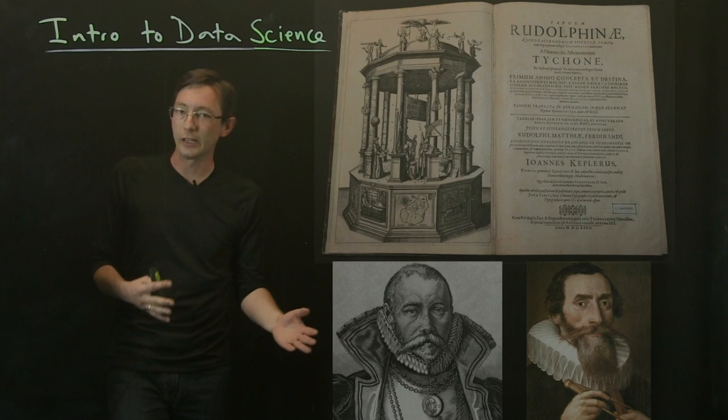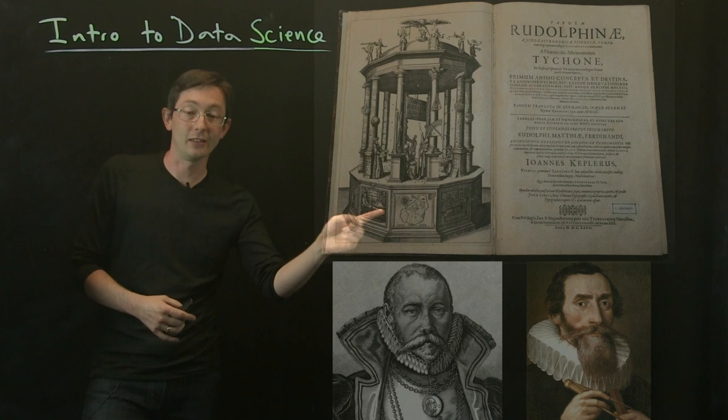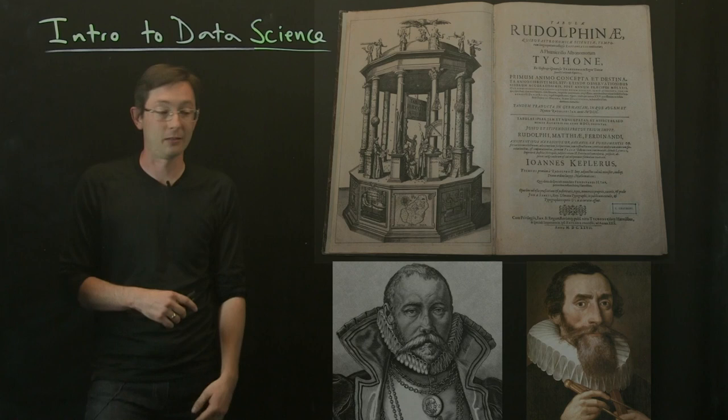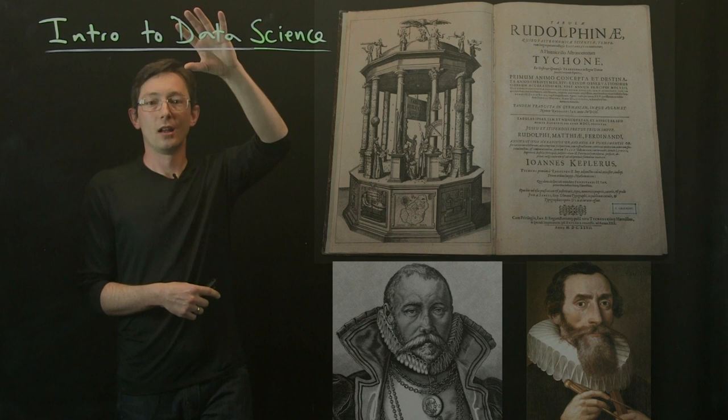Fun fact about Tycho, very interesting character. He lost the tip of his nose in a duel when he was a young man arguing about who was a better mathematician. On his science island, he had a pet moose which was apparently very fond of beer and would entertain his guests by drinking a tremendous amount of beer. Tycho Brahe is a really interesting guy.